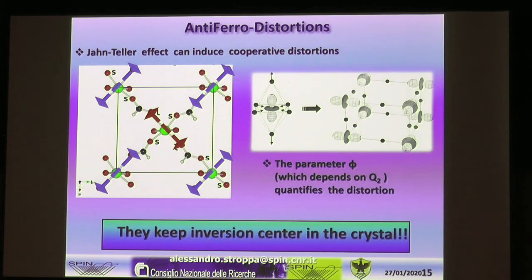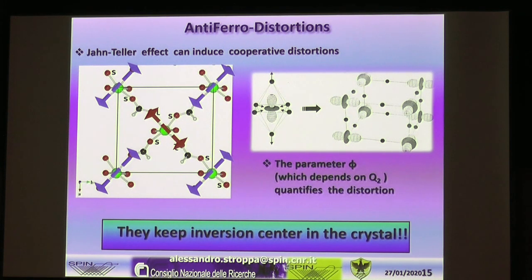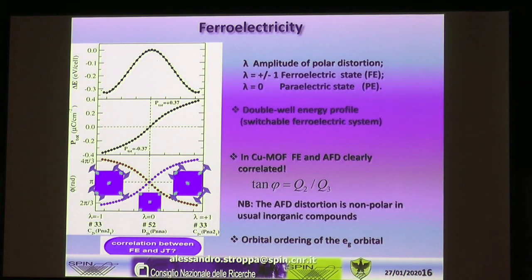In our case we don't have a single Jahn-Teller ion but a cooperative array of these atoms, with distortions linked together. The long bond of one Jahn-Teller ion is perpendicular to the long bond of the neighboring ion in the same plane — this is called antiferrodistortive distortion. Importantly, this collective cooperative distortion keeps the inversion center in the crystal, but can give rise to preferential orbital orientation and orbital ordering.